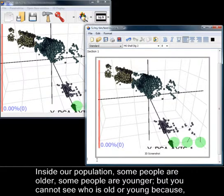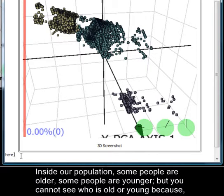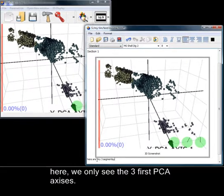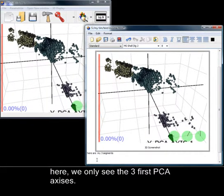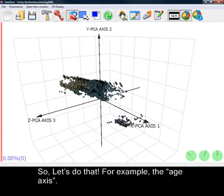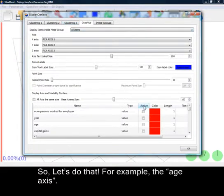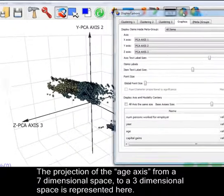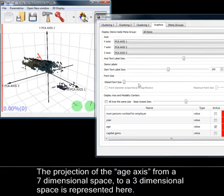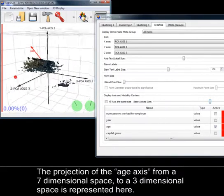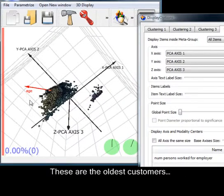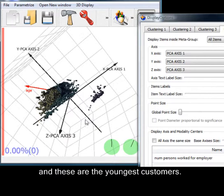Inside our population, some people are older, some people are younger. But you cannot see who is old or young because here we only see the first three PCA axes. You can ask Stardust to represent the original axes in 3D. So let's do that. For example, the age axis. The projection of the age axis from a seven dimensional space to a three dimensional space is represented here. These are the oldest customers. And these are the youngest customers.